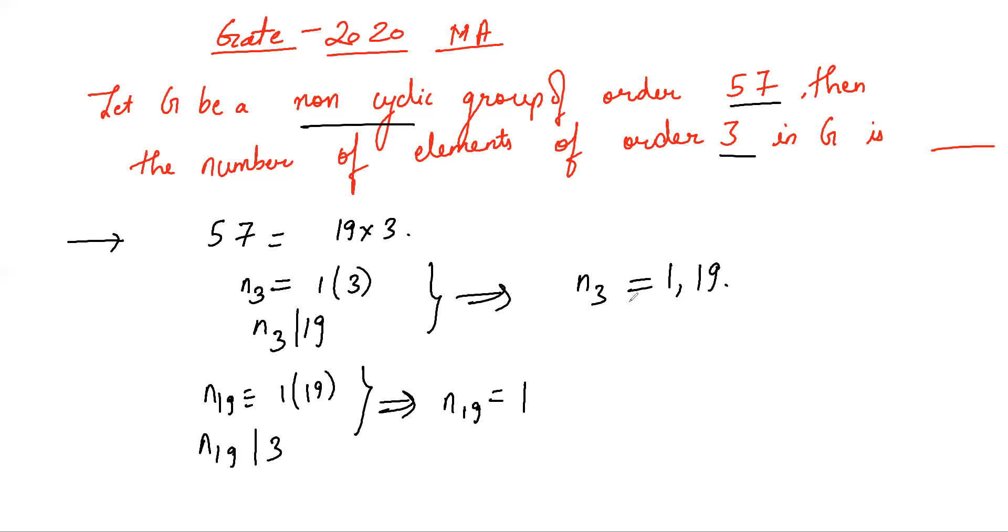So if n3 were 1, there exists a unique subgroup of order 3.